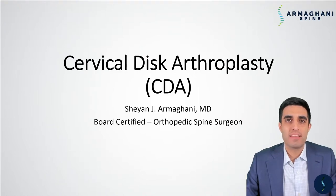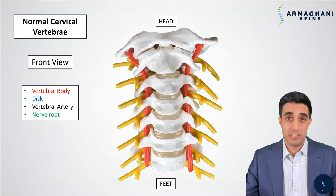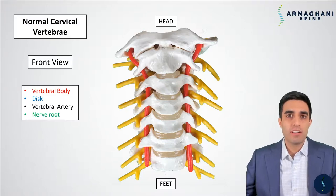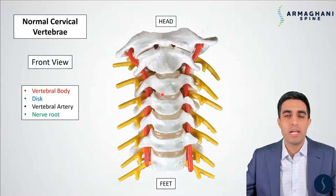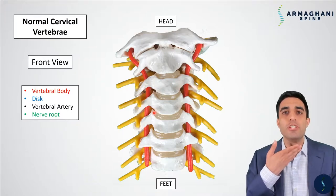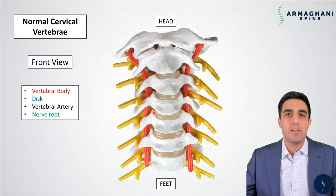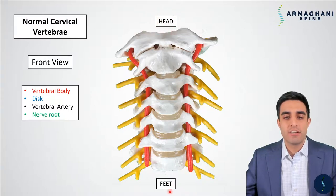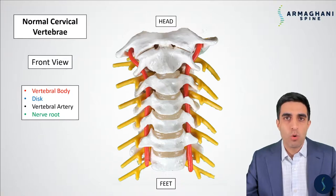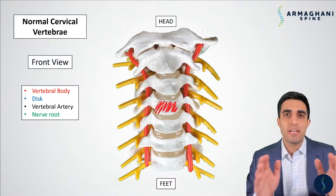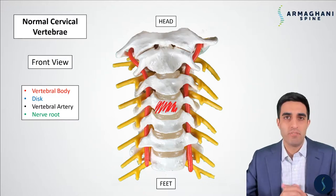Let's talk about the topic for today: cervical disc arthroplasty. Before we get into how to do this procedure, we need to have an understanding of what the normal anatomy looks like. Over here on your left is a normal cervical vertebrae — a front view, as if you're looking at it right from your throat. Up top is where your head is, and your feet are at the bottom. The first important landmark is the vertebral body — think of it as the building blocks that make up your spinal column, stacked right on top of each other.